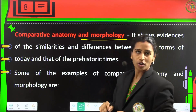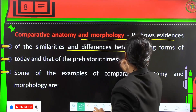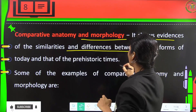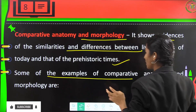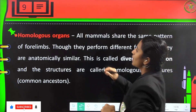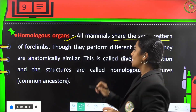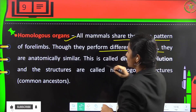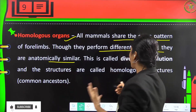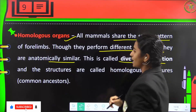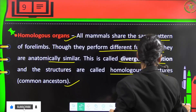Comparative anatomy and morphology show evidence of similarities and differences between living forms of today and prehistoric times. Examples include homologous organs — all mammals share the pattern of four limbs, and though they perform different functions, they are anatomically similar. This is called divergent evolution, and these are called homologous structures, pointing to a common ancestor.